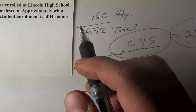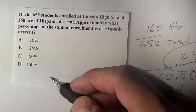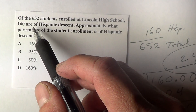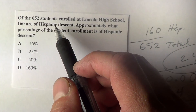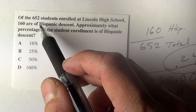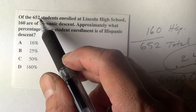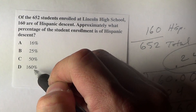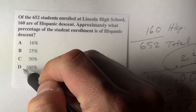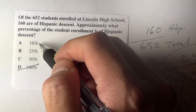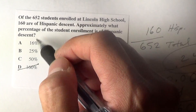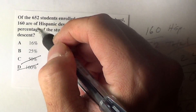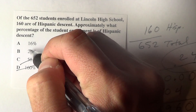So if we look at the answer choices, 160 students are Hispanic, and we want to know what percentage that is out of 652. Well, we know it's not 160% — that's not possible, so we can cancel that out. And 50%? No, that's too much. And look, here's our answer right here: 25%.